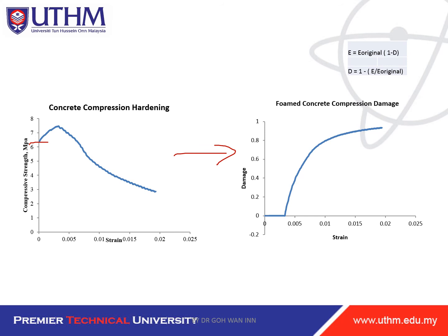The damage formula is: E equals E_original times (1 − d). Rearranging, d equals 1 minus E divided by E_original. E_original is the initial elastic modulus (slope of the elastic part), and E for each point is the slope at that point. From this you will get the value of d, the damage variable, for each point along the curve.